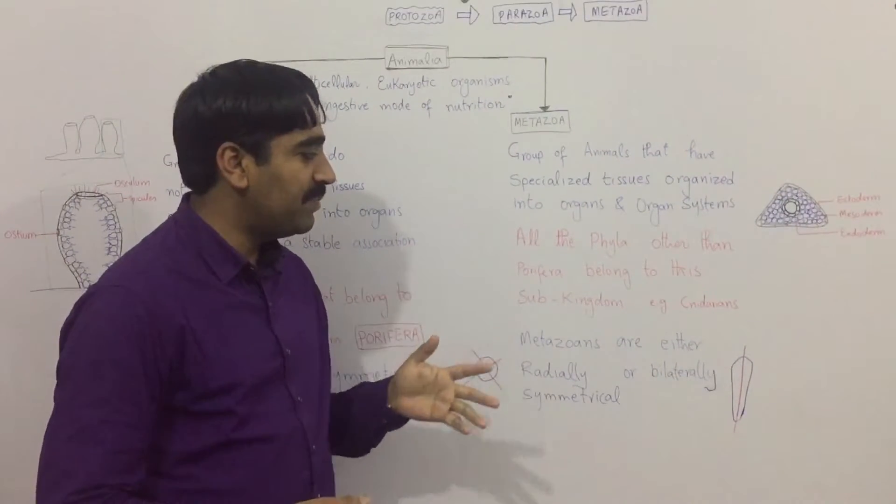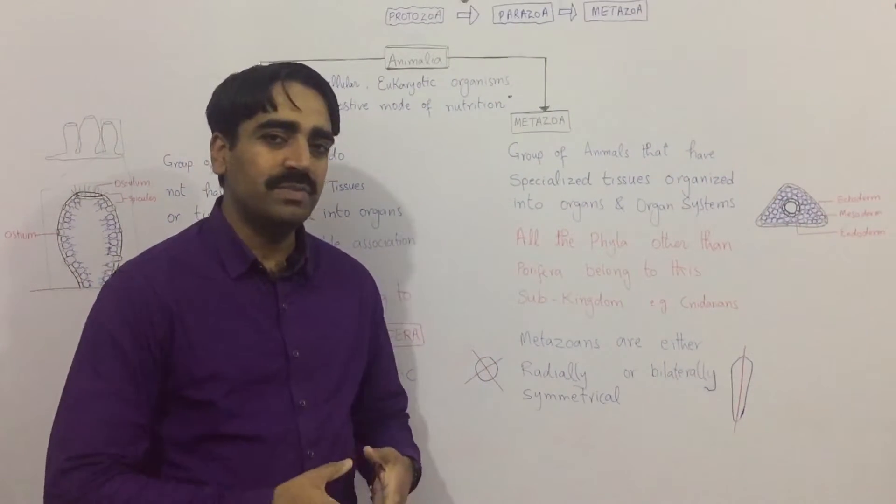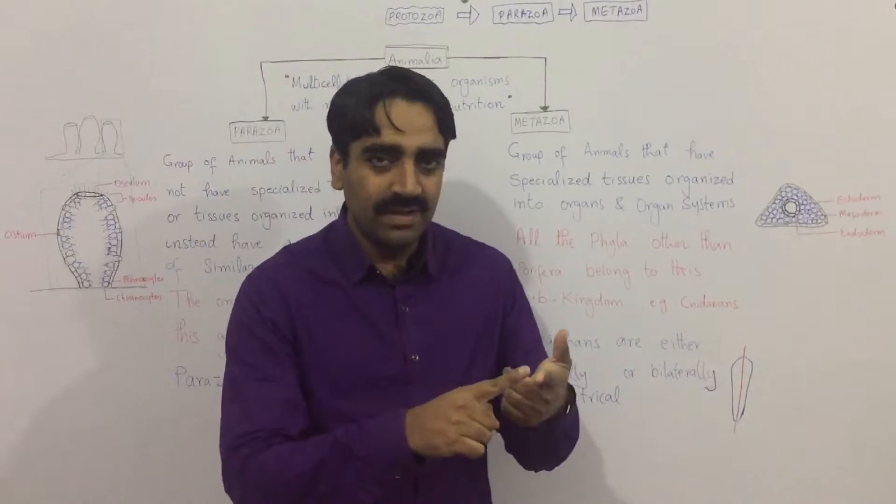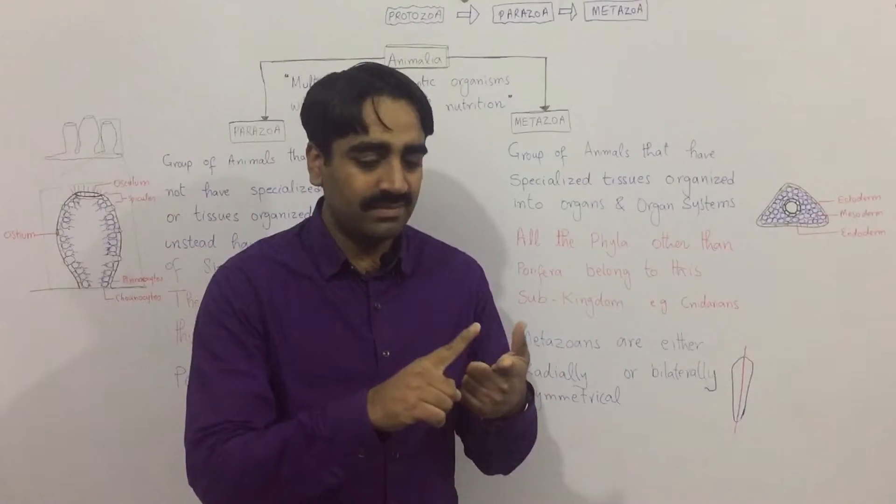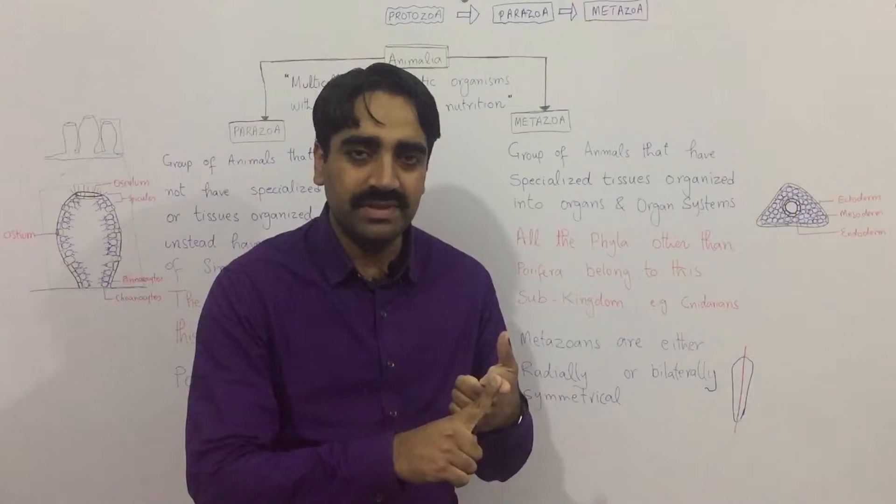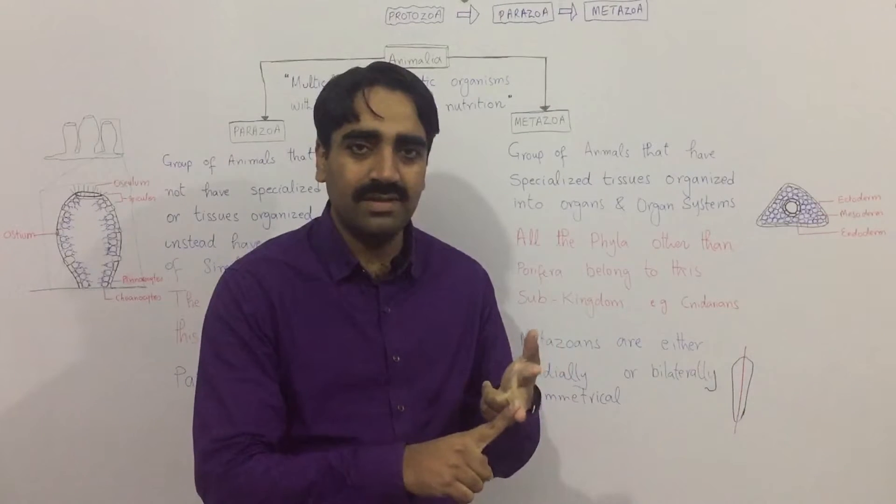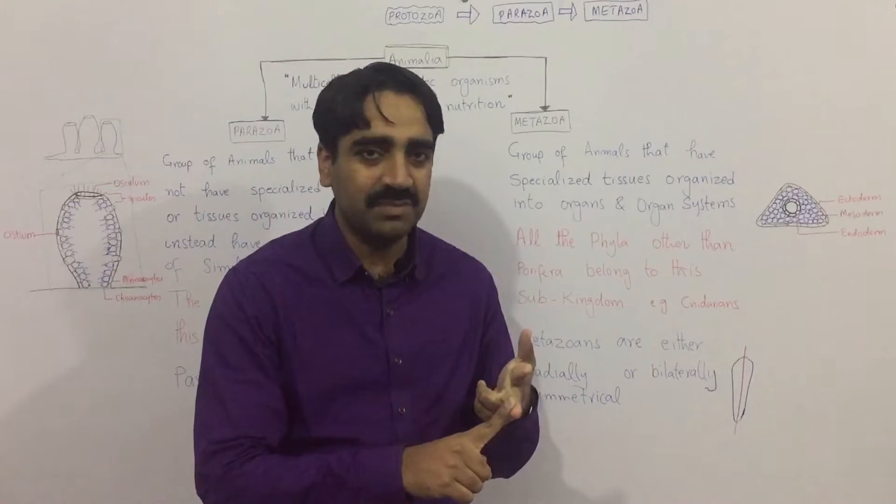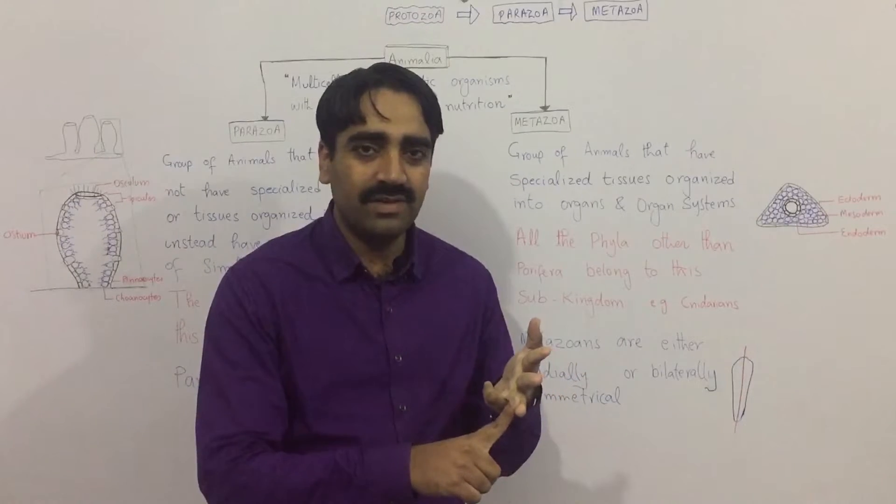All the phyla other than porifera belong to this group and may include in sequence: after porifera, there are cnidarians, there are platyhelminthes, the flatworms, the roundworms.